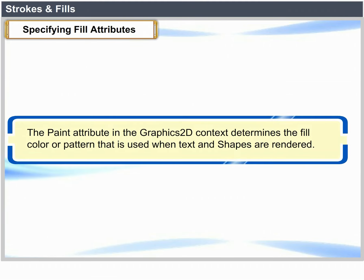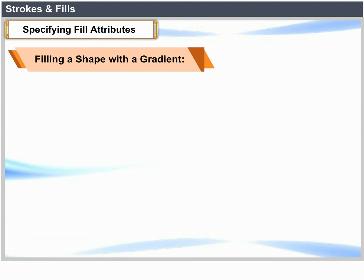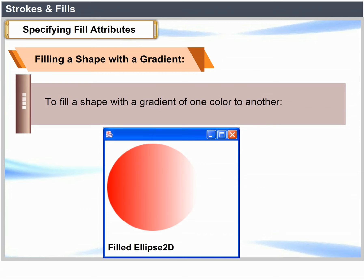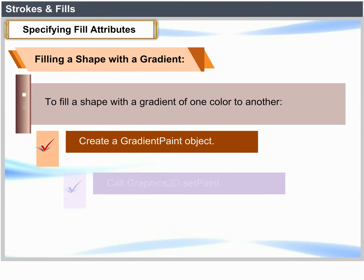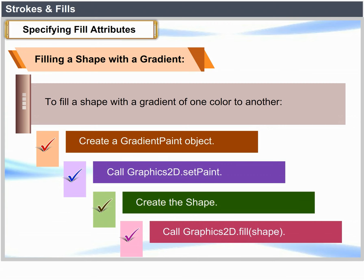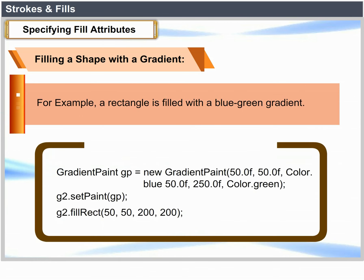Specifying fill attributes: The paint attribute in the Graphics2D context determines the fill color or pattern used when text and shapes are rendered. To fill a shape with a gradient, the GradientPaint class provides an easy way to transition from one color to another. Create a GradientPaint object, call Graphics2D.setPaint, create the shape, and call Graphics2D.fill. For example, a rectangle filled with a blue-green gradient: GradientPaint gp = new GradientPaint(50.0f, 50.0f, Color.blue, 50.0f, 250.0f, Color.green).